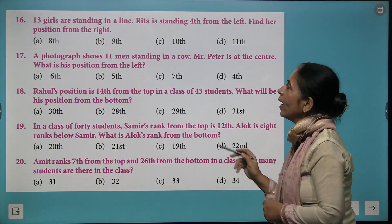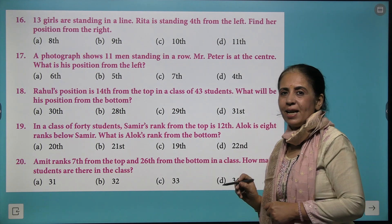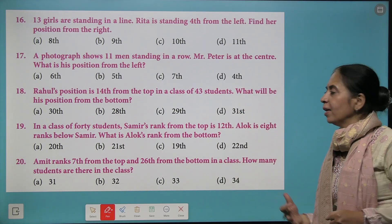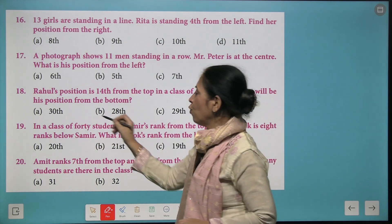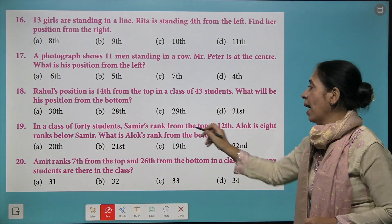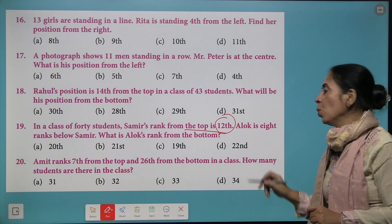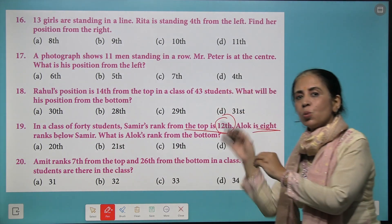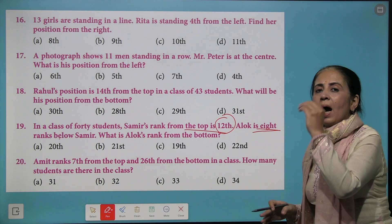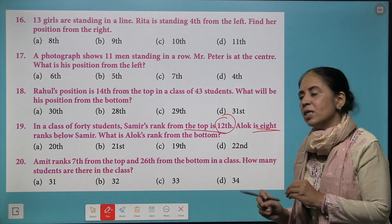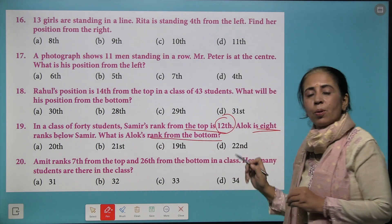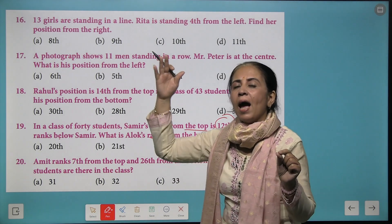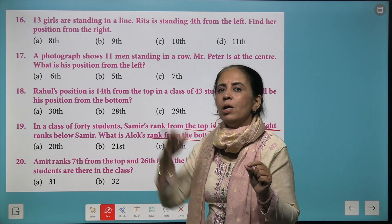Wonderful, we get 10 as the right position of Rita. Let's look at another question: in a class of 40 students, Samir's rank from the top was 12, and Alok has 8 ranks below Samir. That means 12 plus 8 is 20. Alok's rank from the top is 20. The question is what was Alok's rank from the bottom?